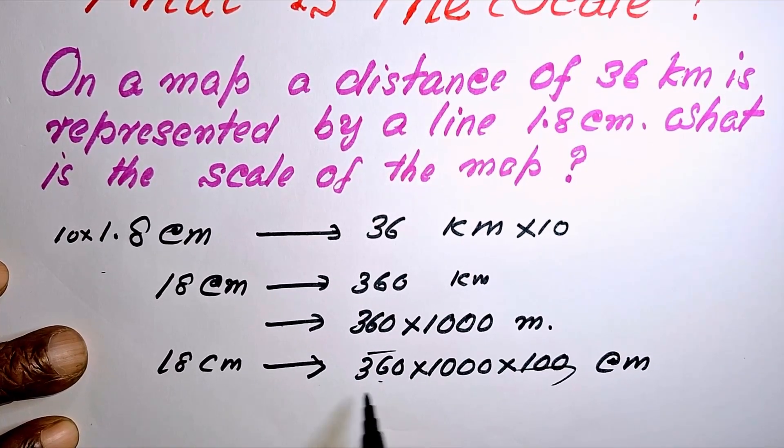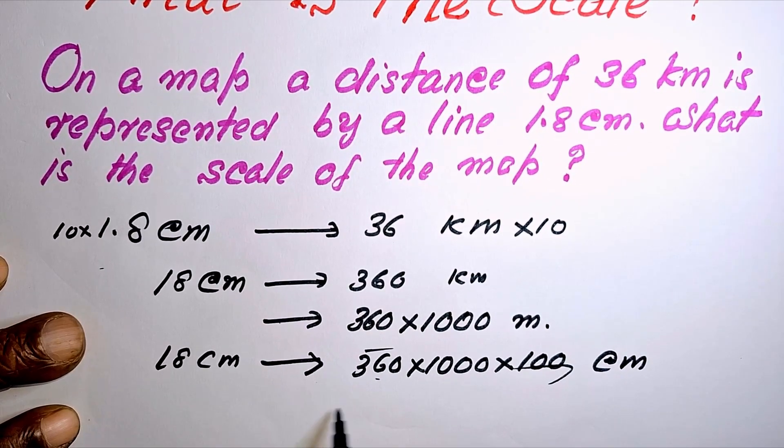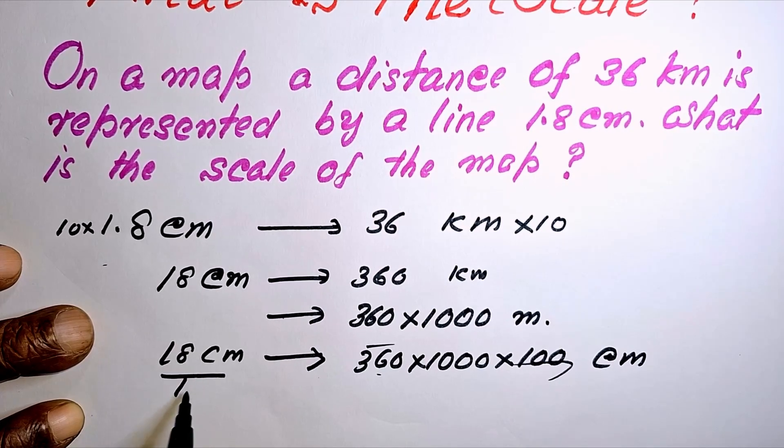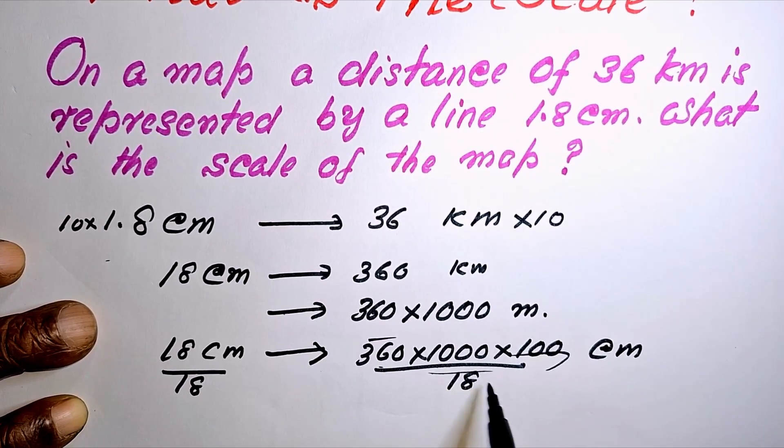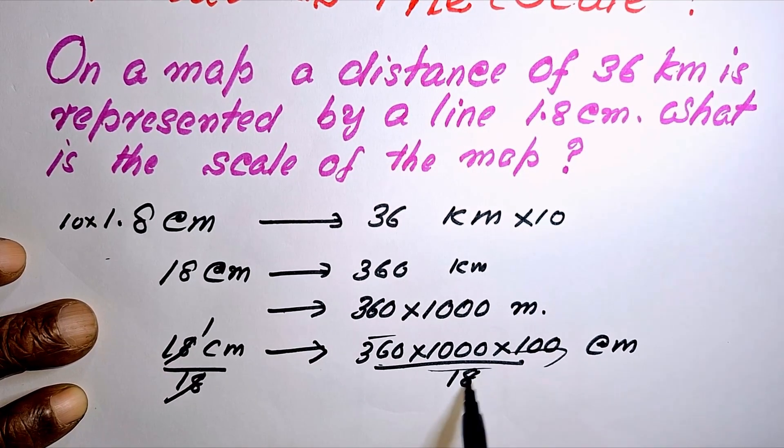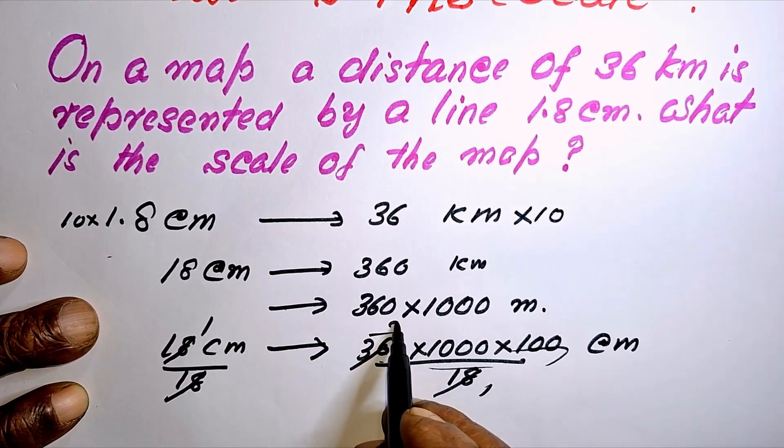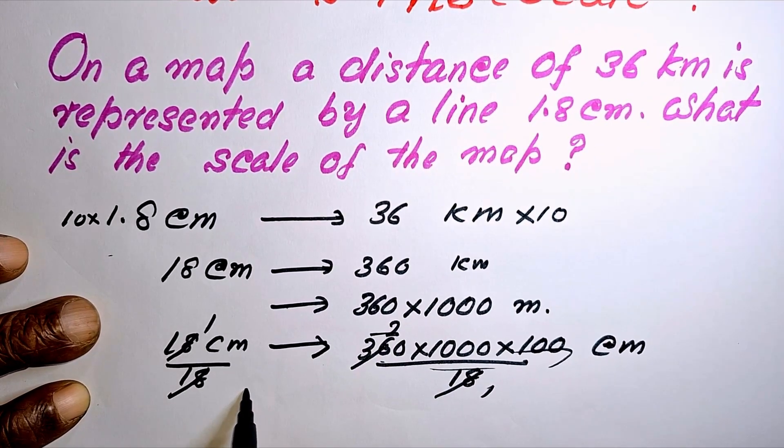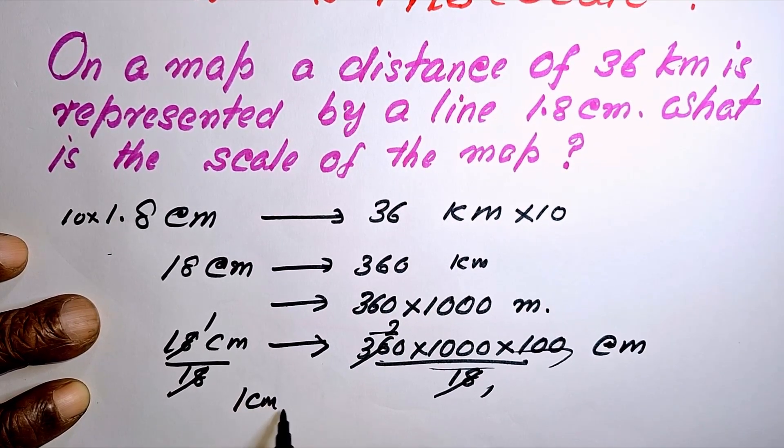Now, for the scale, we divide both sides by 18. So what happens is, one cm represents